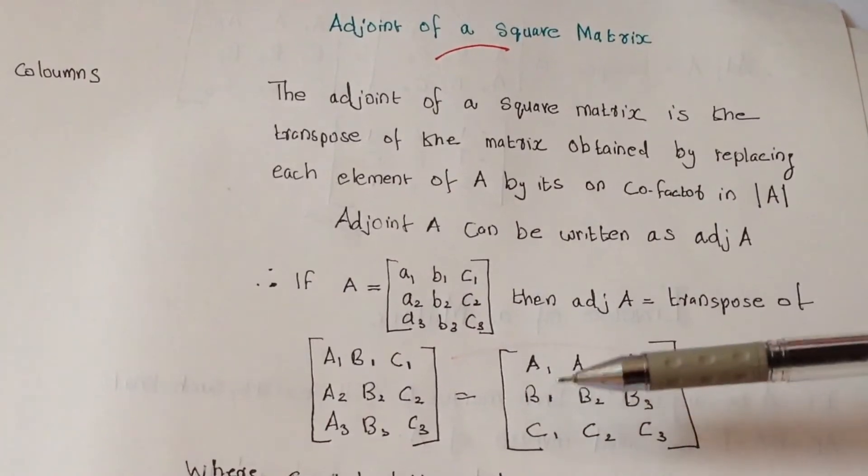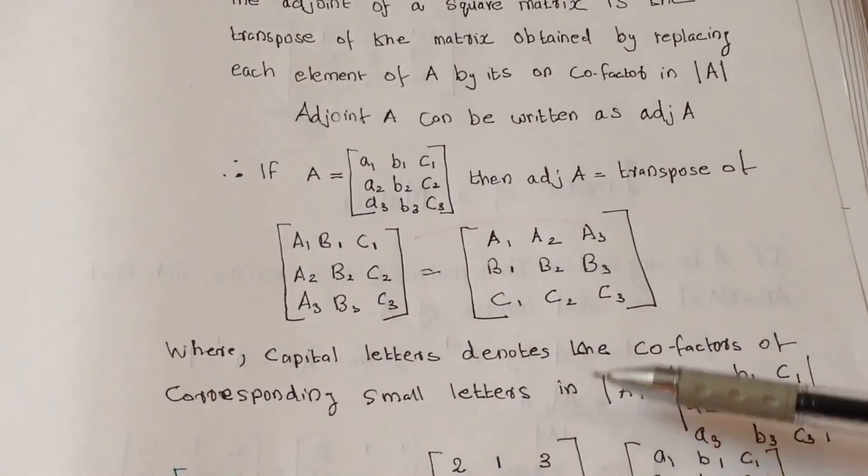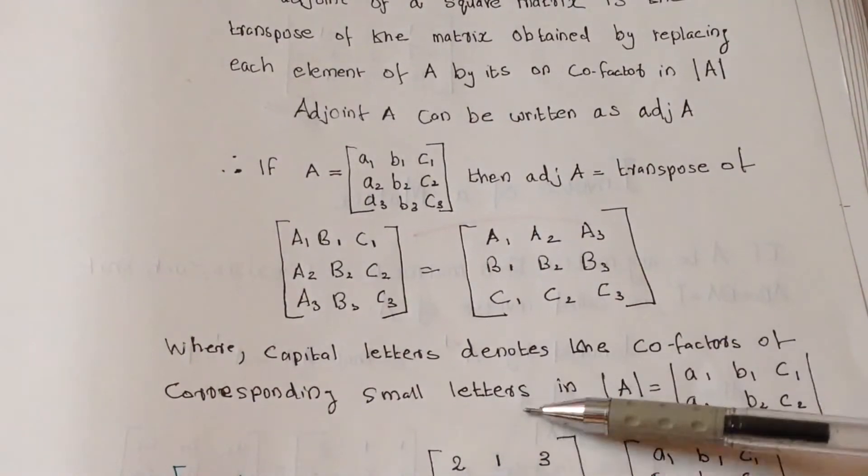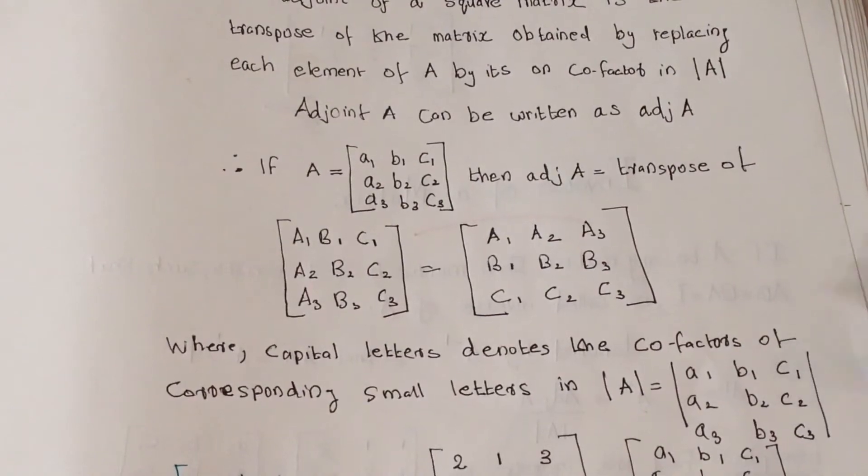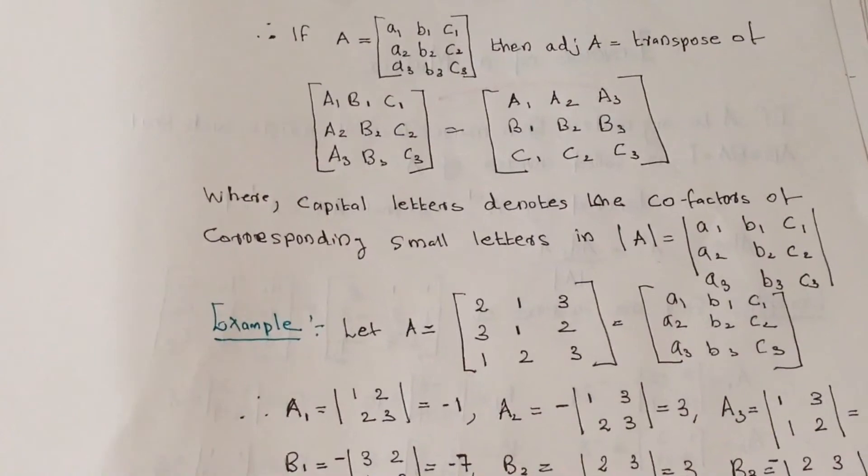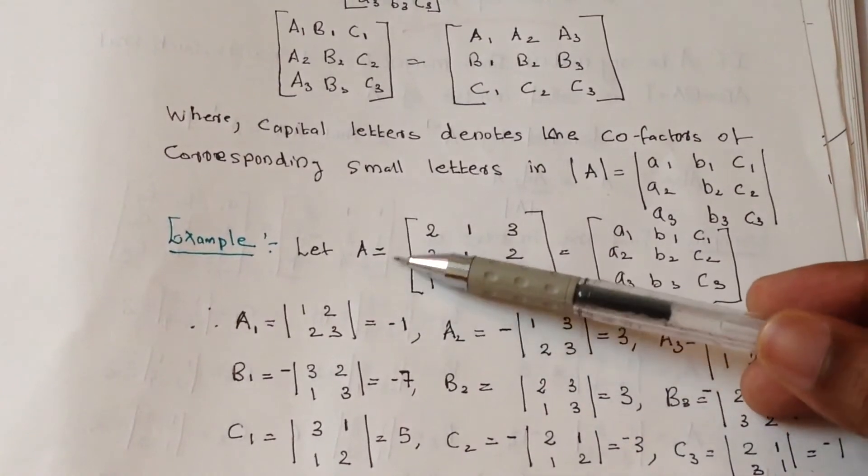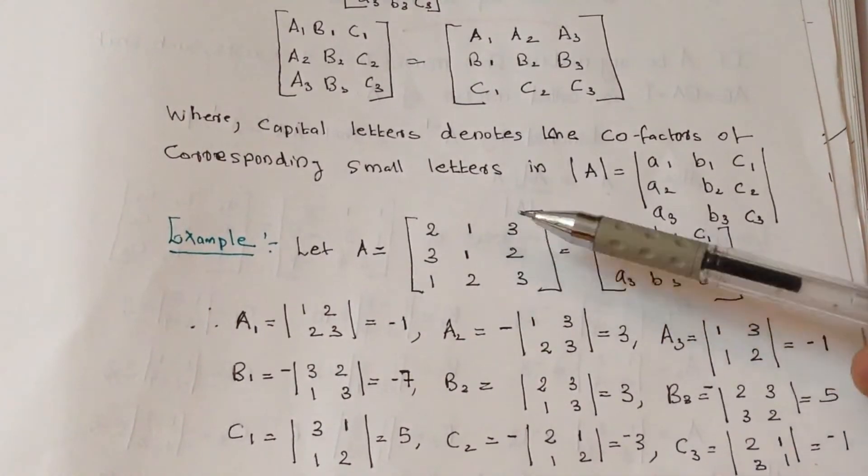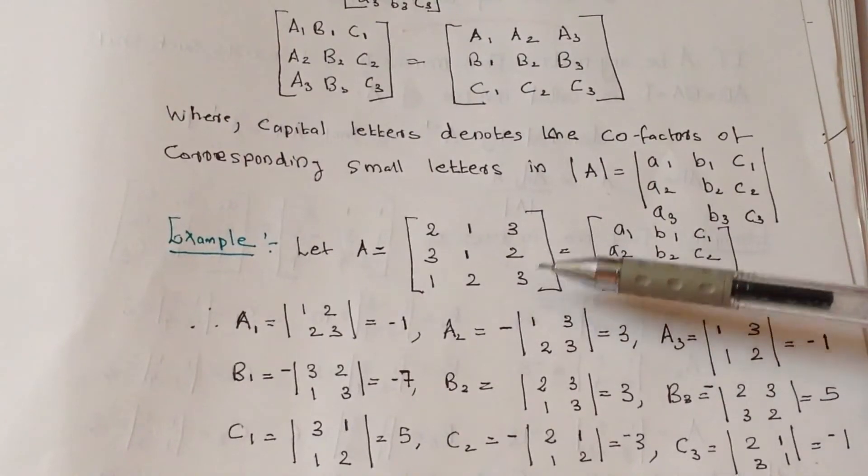This is the basic concept where capital letters denote the cofactors of corresponding small letters in determinant A. Let's take an example. If we do an example, we will get more clarity. Let A equal 2 1 3, 3 1 2, 1 2 3.